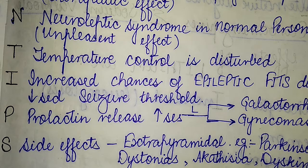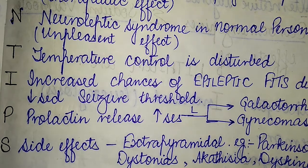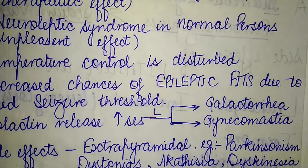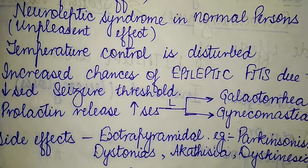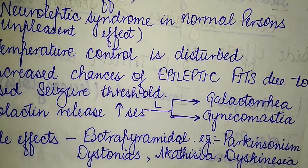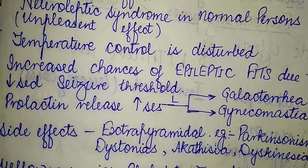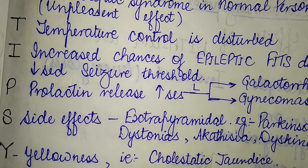The S of anti-psychotic corresponds to side effects, specifically extra-pyramidal side effects, which can be seen in the form of parkinsonism, dystonias, akathisia, and dyskinesia.